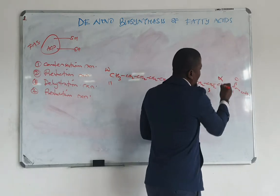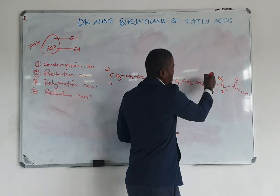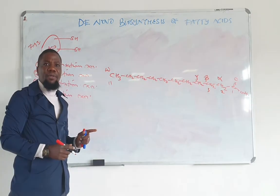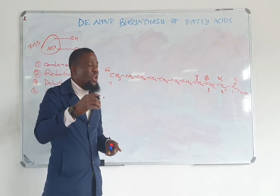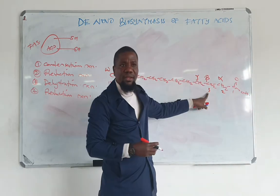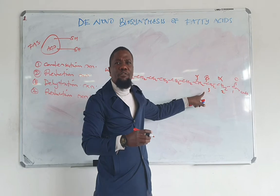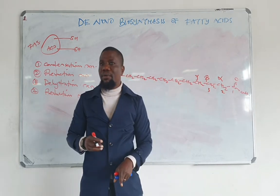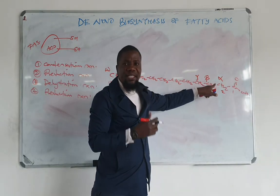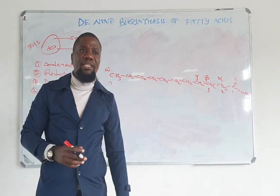The carboxyl carbon is at one end; then the next carbon is the alpha carbon, then the beta carbon, then gamma, and so on. The terminal carbon is the omega carbon. In beta-oxidation, we talk about oxidation around the beta carbon, which is carbon number three. In fatty acid synthesis, the reduction also occurs around carbon number three — the beta carbon — specifically between the alpha and beta carbons.